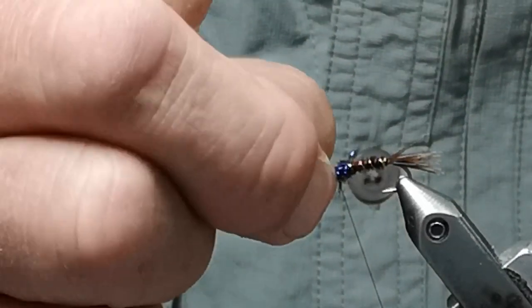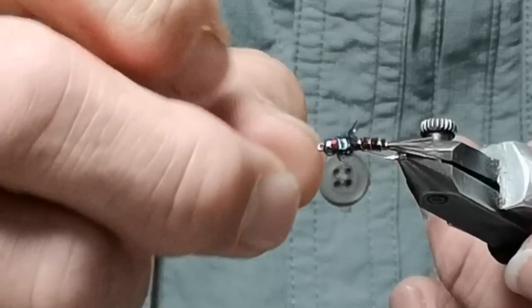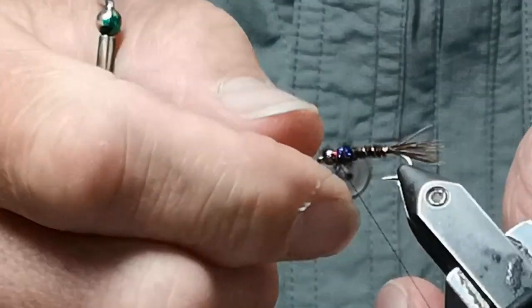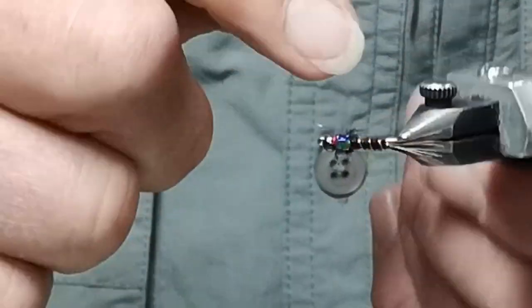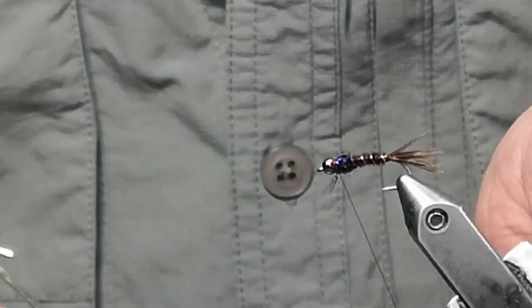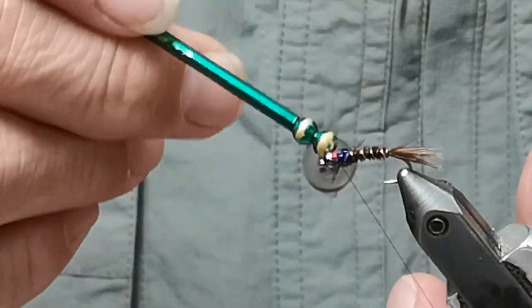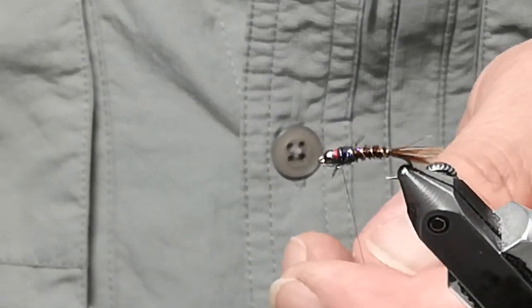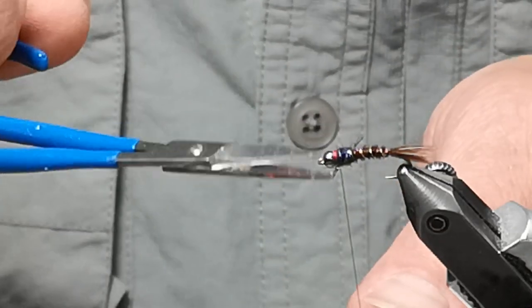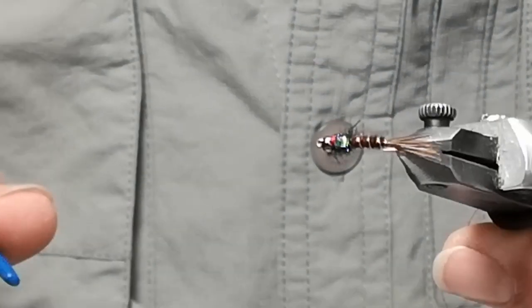We have what I call a long bodied pheasant tail swimmer style. It's got the Flashabou on it, it's got a nice tail. I have added legs before, but I haven't found it's as valuable as the time it takes to put them on, so I'm just going to work with it this way. It's been working very well.